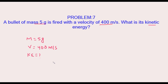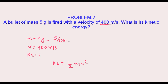We know that kinetic energy equals one-half m v squared. This is the formula for kinetic energy. But first we have to change the mass into SI units — the unit of mass is kg — so 5 grams becomes 5 divided by 1000, which is 0.005 kg.